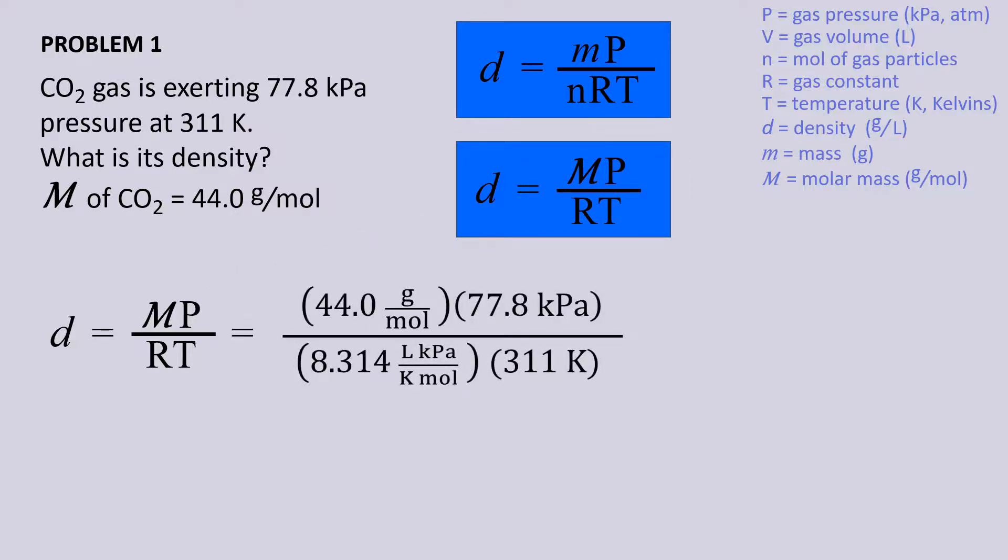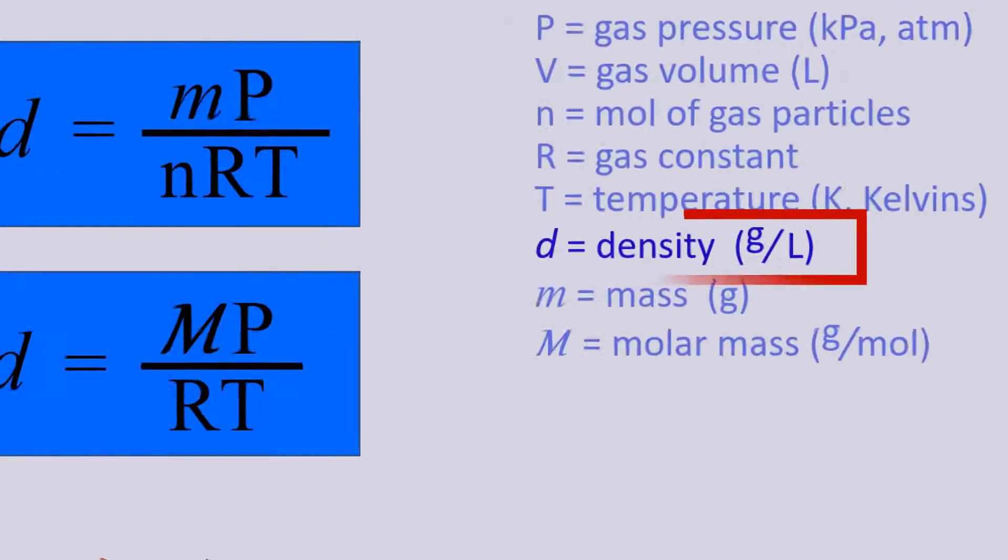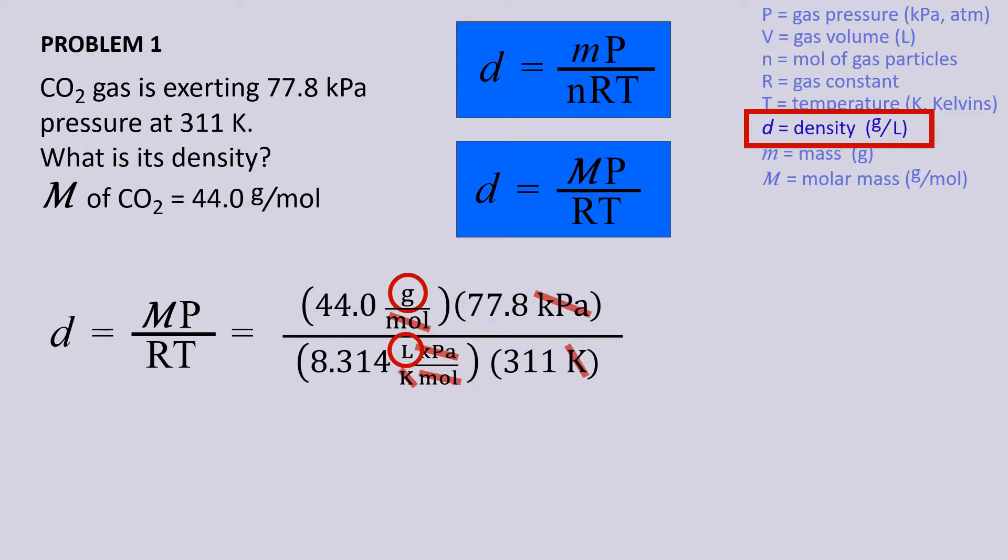Plugging in the values from the problem as well as using the gas constant with the appropriate units, in this case liters since we want the gas density to be expressed with liters and kilopascals is the unit in the problem, while Kelvin has to be used since the gas constant relies on absolute temperature and moles is the common way to express the amount of gas particles in chemistry. We see that Kelvin cancels, kilopascals cancels, and moles cancel, which leaves grams over liters, which is mass over volume, which is density. If your units do not cancel correctly, then you have set up the problem incorrectly.